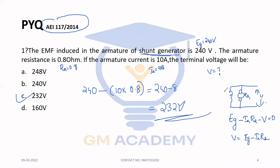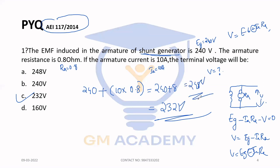In the case of a motor, the equation is V = EB + IA × RI. In the case of a generator, you use V = EG − IA × R. Here it is plus for motor and minus for generator. If you use the plus, the value is 248V; the correct answer using the generator equation is 232V.